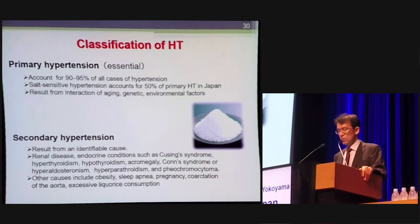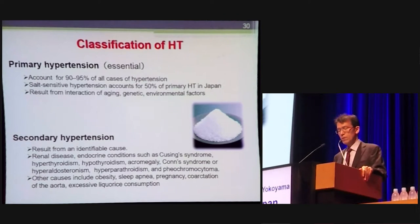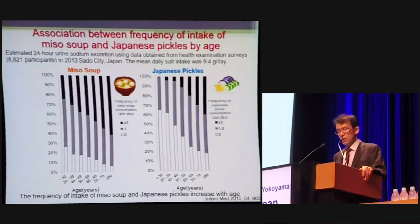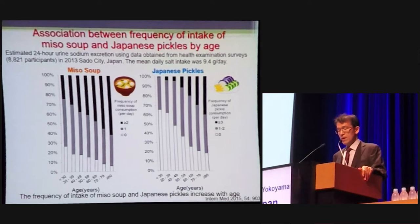Hypertension is classified into two types: primary hypertension and secondary hypertension. Primary hypertension accounts for 90% of cases, and salt-sensitive hypertension accounts for 50% of primary hypertension in Japan. Japanese people love salt-rich miso soup and Japanese pickles. This slide shows estimated 24-hour urine sodium excretion from a health examination survey: the mean daily salt intake was 9.4 grams per day, and the frequency of intake of miso soup and Japanese pickles increases with age.